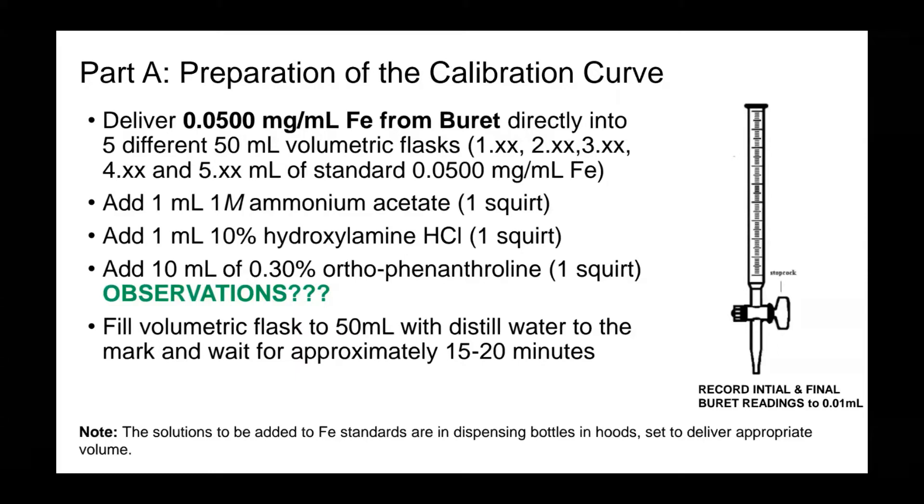First, you deliver 0.0500 milligrams per milliliter of iron from the burette directly into five different 50 ml volumetric flasks. Use volumes of approximately 1 ml, 2 ml, 3 ml, 4 ml, and 5 ml of the standard iron. Then, you will add 1 ml of 1 molar ammonium acetate, then add 1 ml of 10% hydroxylamine HCl, then add 10 ml of 0.30% orthophenanthroline. Make sure you write down your observations.